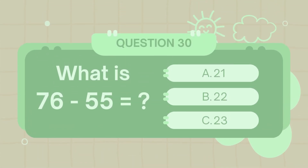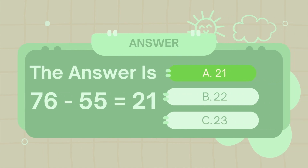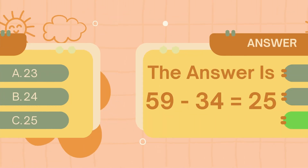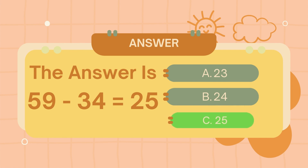What is 76 minus 55? The answer is 25. What is 59 minus 34? The answer is 25.